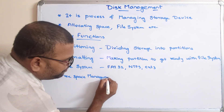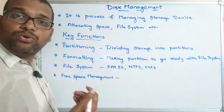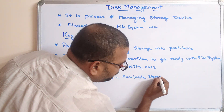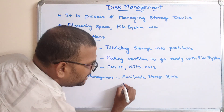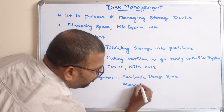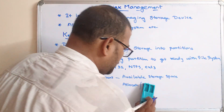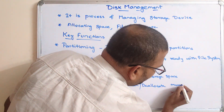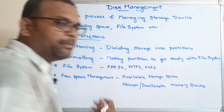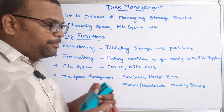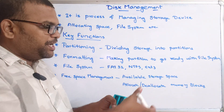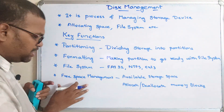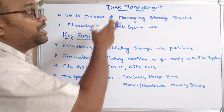The next function is free space management, which deals with available storage space. Based on the available storage space, it will allocate or deallocate memory blocks to files. Files are stored in memory blocks, so memory needs to be allocated to store files. Based on free space, allocation is done, and upon completion, deallocation of memory blocks is done.